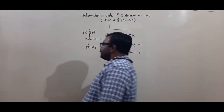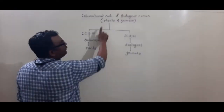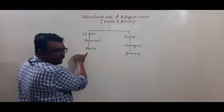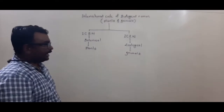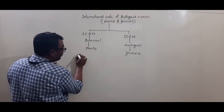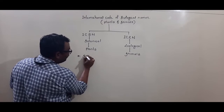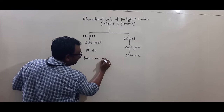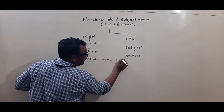Remember: the International Code of Biological Nomenclature applies to both plants and animals, but Botanical Nomenclature (ICBN) applies only to plants, and Zoological Nomenclature (ICZN) applies only to animals. All this nomenclature system is further standardized by a system called binomial nomenclature.